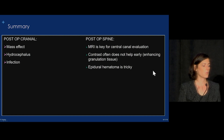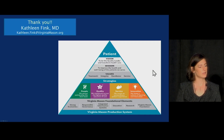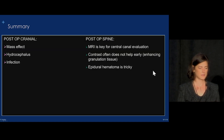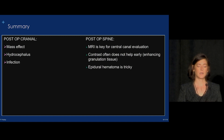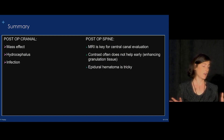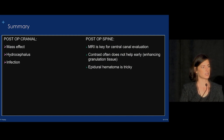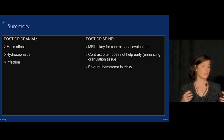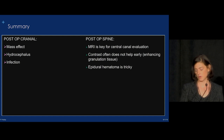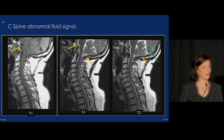In summary, when looking at intracranial post-operative imaging, think about mass effect, hydrocephalus, and infection. For the spine, MRI is key for evaluation. Contrast often doesn't help, but we often obtain it given the possibility of extensive enhancing granulation tissue. Epidural hematomas are very tricky, but if you see mass effect on the thecal sac, you have to consider epidural hematoma as the possible cause. Thank you very much.